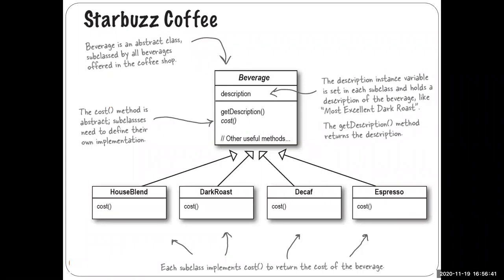Consider this example: we have a coffee shop like Starbucks with a beverage abstract class with common methods like get description and cost. These can be abstract methods because they must be implemented by the subclasses. Then you have standard subclasses of beverage: house blend, dark roast, decaf, espresso, and so on. Every one of these classes implements a cost that is different, and get description that can be modified for each subclass. This is a standard example of inheritance.